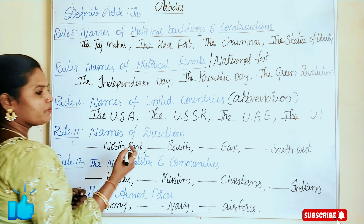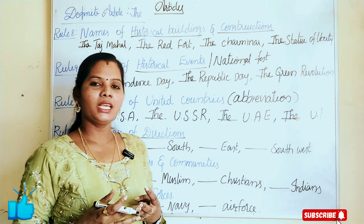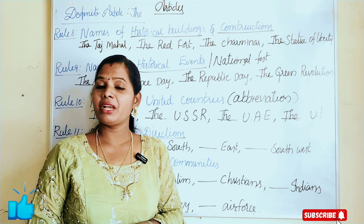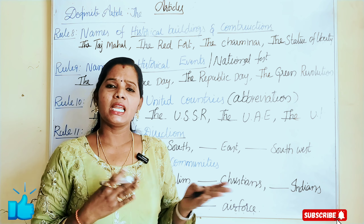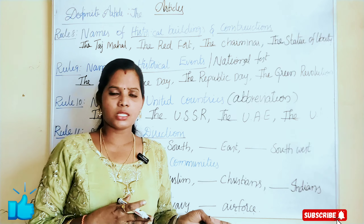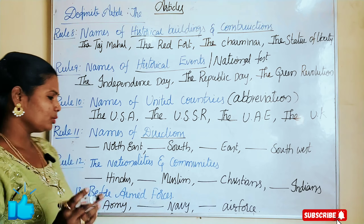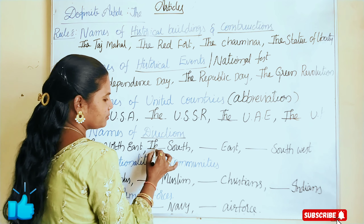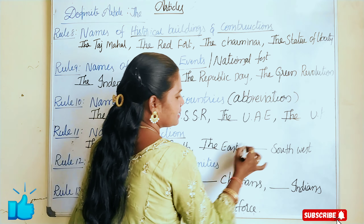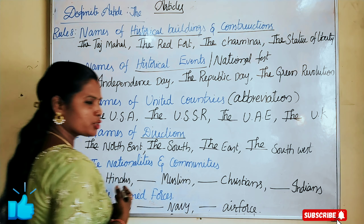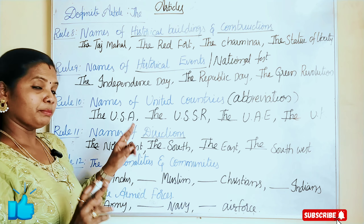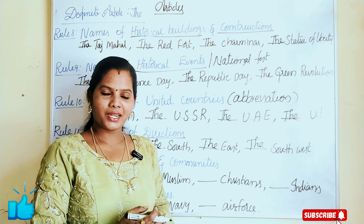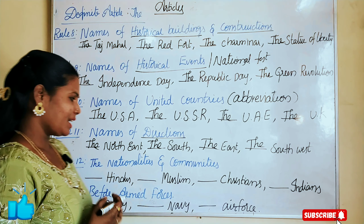The next rule is names of directions. We actually have four directions, and as a whole we have: North, East, South, West, North East, North South, South East, South West. Before all direction names, we have to use the article 'the'. Like the North East, the South, the East, the South West. Before any direction, we have to use 'the', because each direction has one identity.